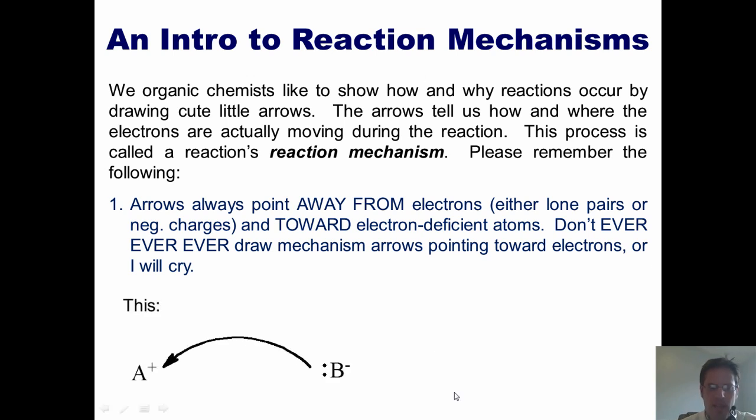Let me show you the example. I've got an atom B that has electrons over here that's going to attack electron-deficient atom A. I always draw the arrow going from the electrons into the other atom, not the other way around.